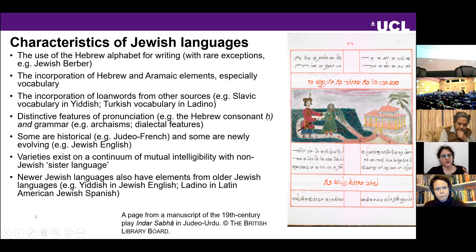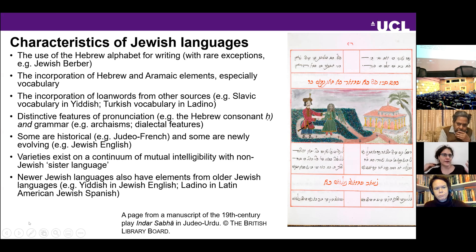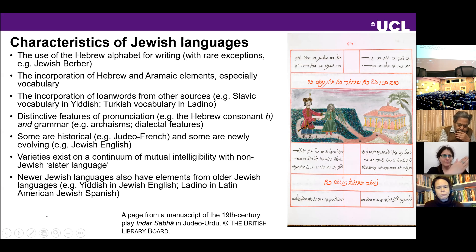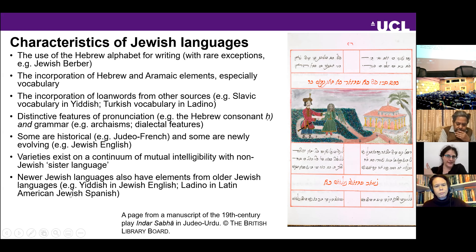They often have distinctive pronunciation features — phonological features derived from Hebrew that don't exist in the non-Jewish sister language — and their own grammatical features, often archaisms or dialectal features lost from non-Jewish sister varieties. Some are historical, like Judeo-French from the medieval period. Some are newly evolving, like Jewish English, primarily a 20th and 21st century variety. They exist on a continuum of mutual intelligibility with the non-Jewish sister language: Jewish English in in-group communication can become quite difficult for someone outside the Jewish community to understand.